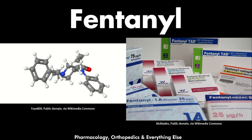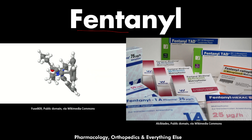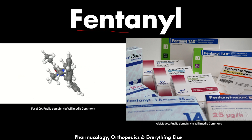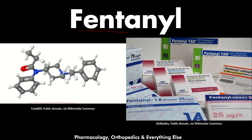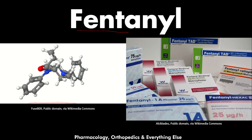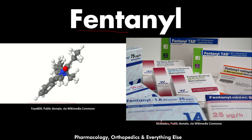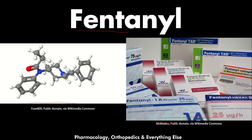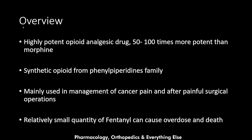Hello and welcome back to the central nervous system pharmacology master class. Here we will talk about fentanyl, which is another opioid analgesic drug. On the left picture is the chemical structure of fentanyl: black spheres are carbon atoms, white are hydrogen, blue are nitrogen, and red is oxygen. The picture on the right is the packaging of fentanyl transdermal patches. You can use the video chapters in the description to skip through to other parts of this video.